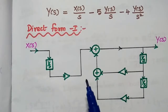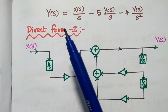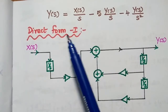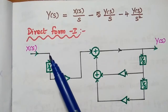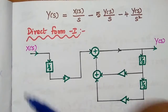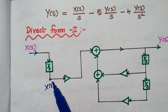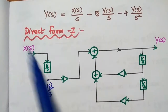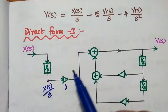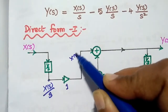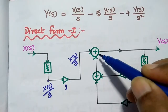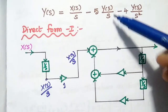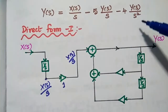We are going to draw the direct form 1 for this equation. X of S is the actual input signal, processed as X of S by S. We give X of S to a 1 by S block to get X of S by S, with a gain of 1. That output is given to the summing junction. We also have two more terms: minus 5Y of S by S and minus 4Y of S by S squared, which are on the output side.